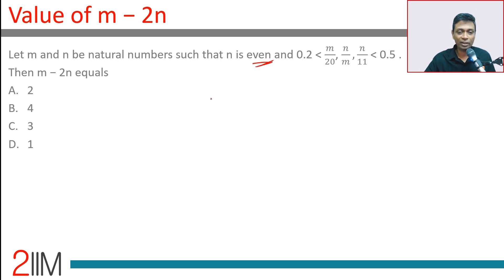I drove myself mad for three or four minutes in the exam. M/20 - I'm going to take each of these. 0.2 < m/20 < 0.5. 0.5 is half, so we can cross multiply. 0.2 × 20 = 4. So 4 < m < 10. M can take values 5, 6, 7, 8, 9.